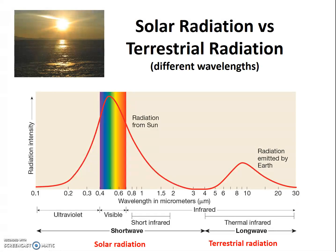The wavelengths emitted by the Sun vary considerably from the wavelengths of radiation emitted by the Earth. Short-wave radiation includes short infrared, visible light, and ultraviolet light. In contrast, long-wave radiation includes a portion of the thermal infrared. For the remainder of the course, short-wave radiation refers to radiation from the Sun, and long-wave radiation refers to radiation emitted from the Earth — terrestrial radiation. It's important that you understand and distinguish between these two terms.